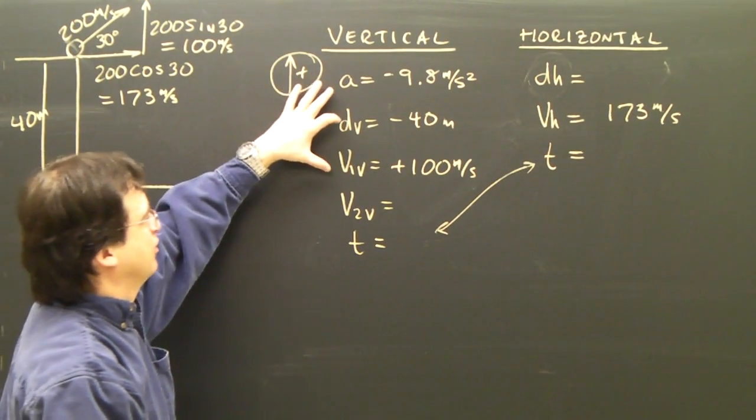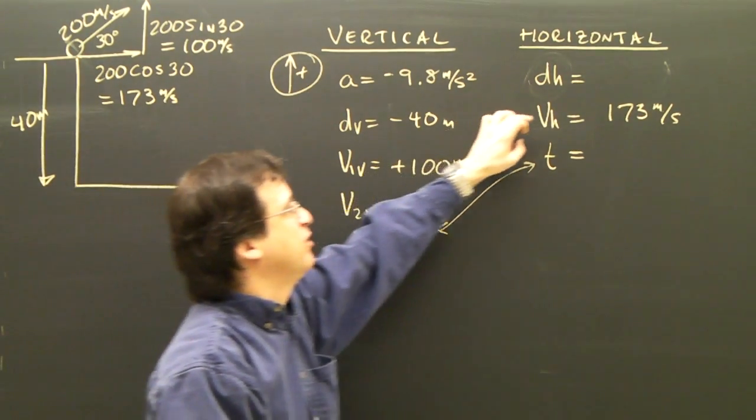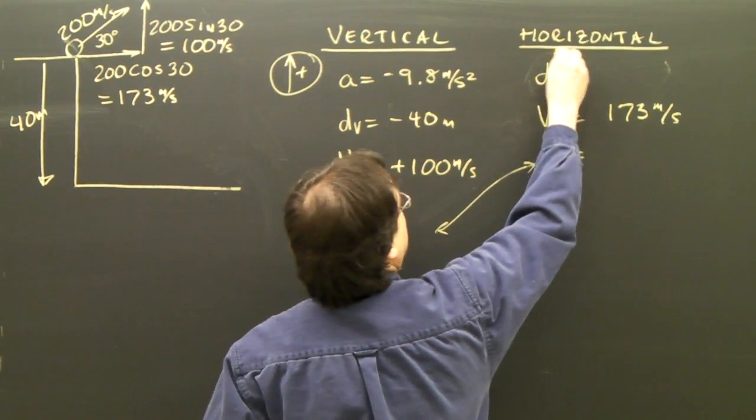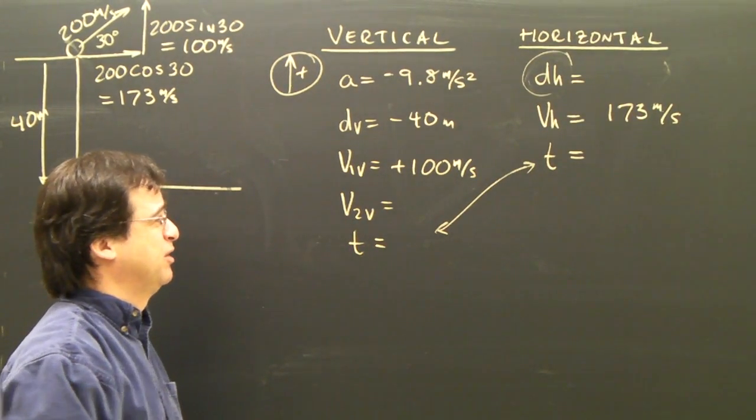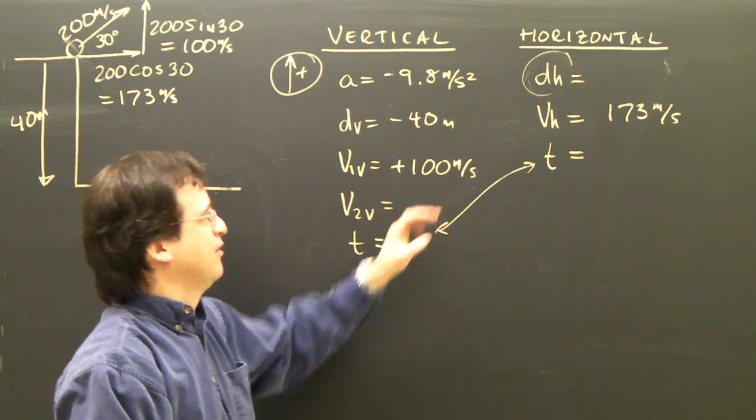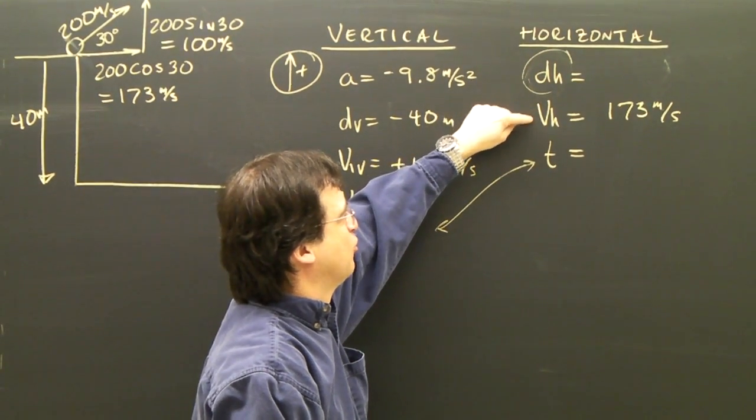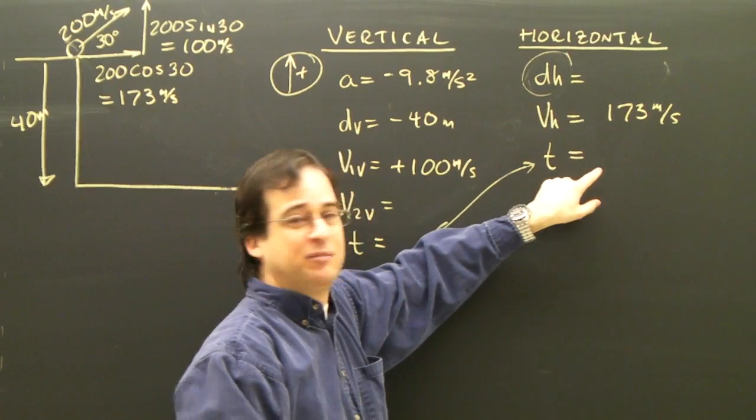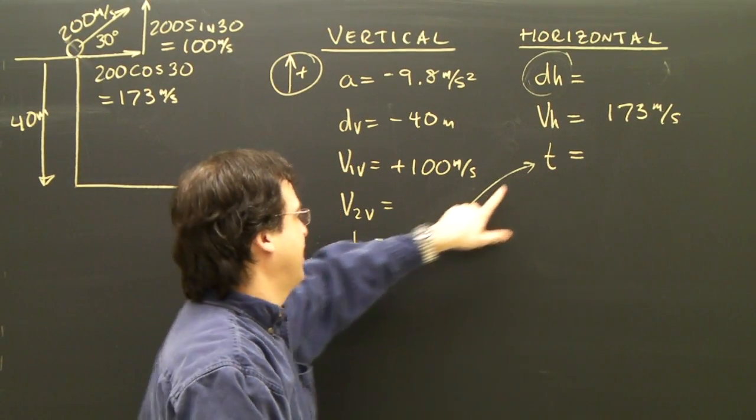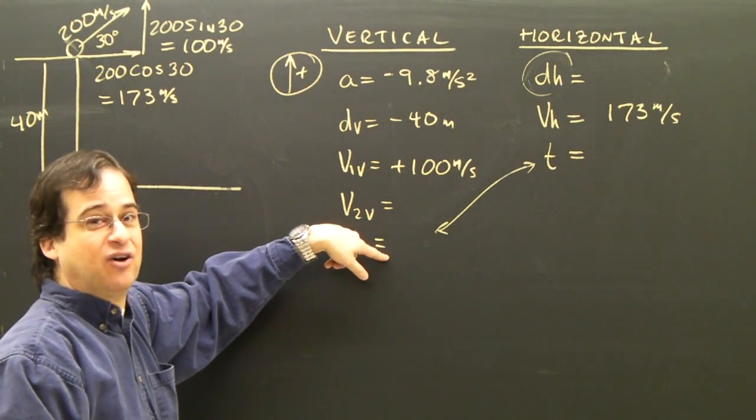So now I've got three things in this column. I've got one thing in this column, and what am I looking for? Again, I'm looking for the horizontal distance, because that's what the question asks. Well, if I'm looking for the horizontal distance, it's the horizontal velocity times time. I've got the horizontal velocity, but I don't have time. Well, that is also the same time that's in this column.